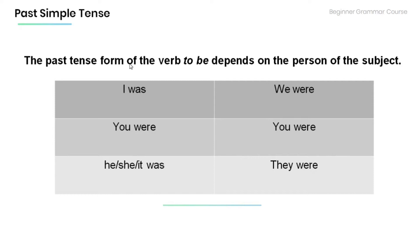The past tense form of the verb 'to be' depends on the person of the subject. Have a look at the tables below.